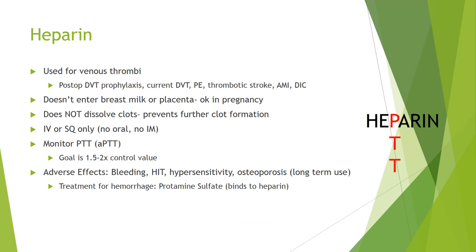Beginning with anticoagulants, let's review heparin. Anticoagulants are for venous thrombi — a patient who has just undergone surgery and is at risk for a DVT, a patient with a current DVT, pulmonary embolism, somebody who has suffered a thrombotic stroke (not a hemorrhagic stroke), or an acute myocardial infarction. It's also a treatment for DIC, which involves overconsumption of clotting factors due to excessive production of microclots — slowing this coagulation process down with heparin can be a treatment for DIC.